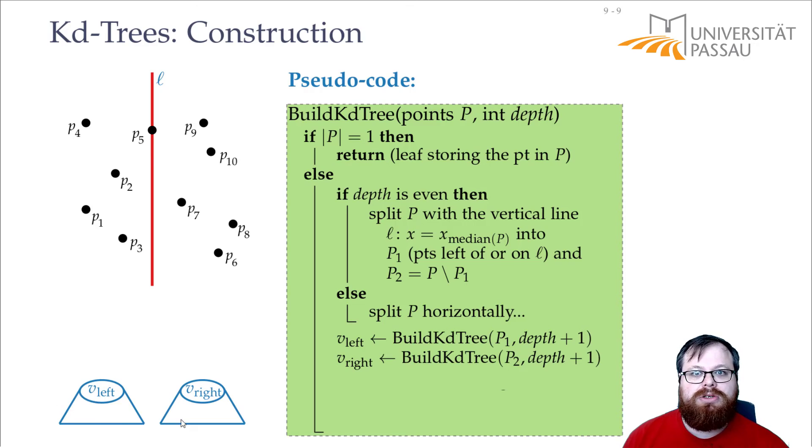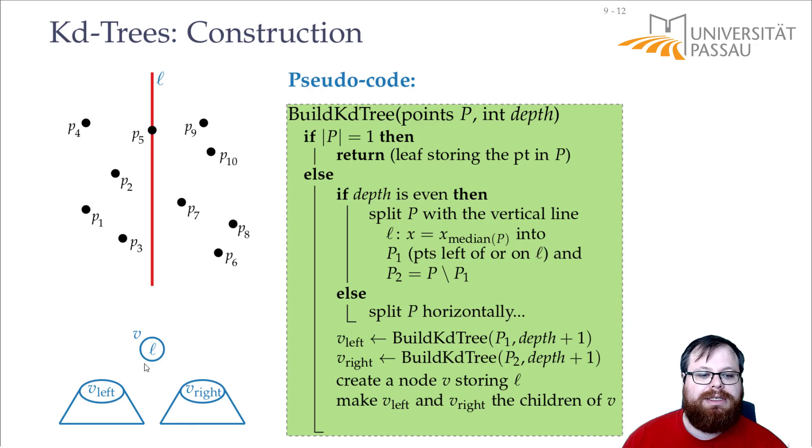We get these two trees from the recursive function, and we want to build another node that corresponds to this line L, that is the splitting line. So we place it here, and its two children are those two KD trees that we built. It has left child and right child.